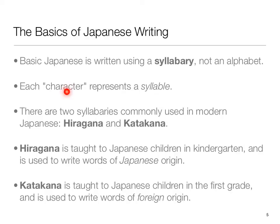However, in a syllabary, each character represents a syllable. That's why when we write in Japanese, it only takes as many characters as there are syllables in the word. Su-shi: two syllables, two characters.